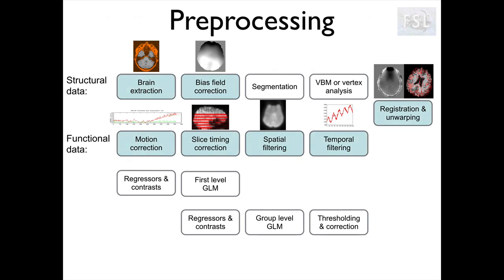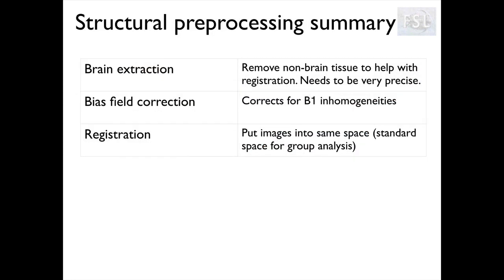Here are all the pre-processing steps. All these aim to reduce noise and/or prepare the data for further analysis. In structural MRI, the main pre-processing steps are brain extraction, which removes non-brain tissue and helps registration and segmentation — for structural analysis, brain extraction needs to be very precise — bias field correction to correct for B1 inhomogeneities related to the RF field, and registration to put images in the same space for group level analysis.